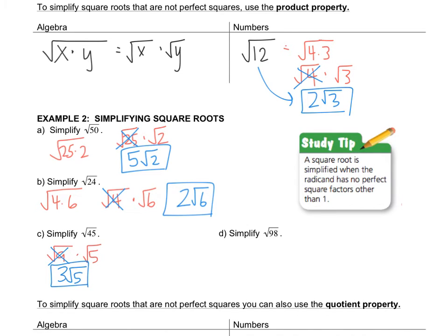Last one in this section: radical 98. Radical 98 has 49 inside of it — it's 49 times 2. You always want to look for a number from the list that goes into the radicand, so I'm going to write this as the square root of 49 times the square root of 2. I picked 49 because the square root of 49 is 7, so 7 radical 2 is my simplified answer.